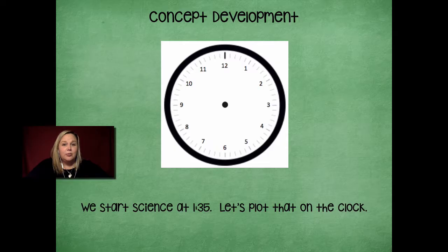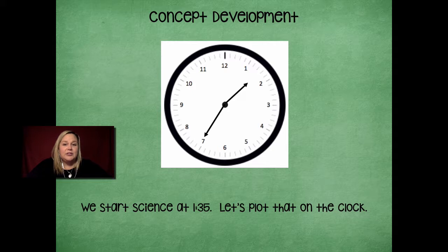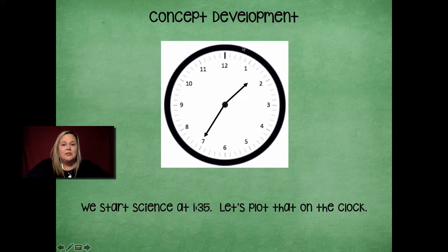Here's what 1:35 looks like on the clock. Notice how the hour hand is more in the middle between the one and the two, because we're more than halfway through the hour — the hour hand has to change and won't stay straight up on the one. We counted around by fives just like on our number line: zero, five, ten, fifteen, twenty, twenty-five, thirty, thirty-five. This represents our science time of 1:35.